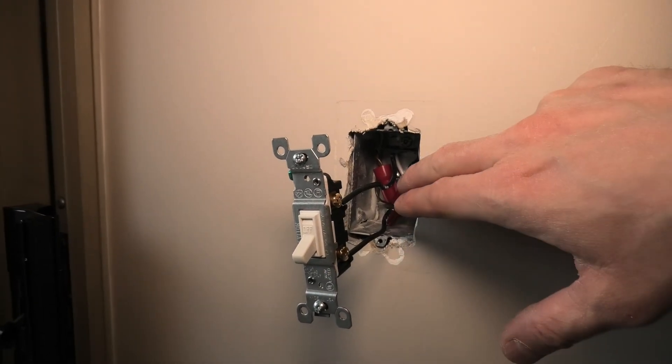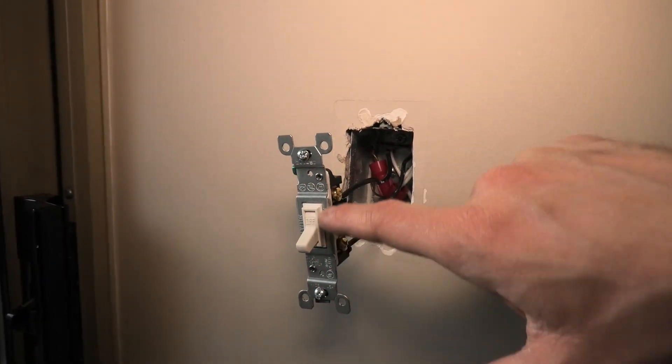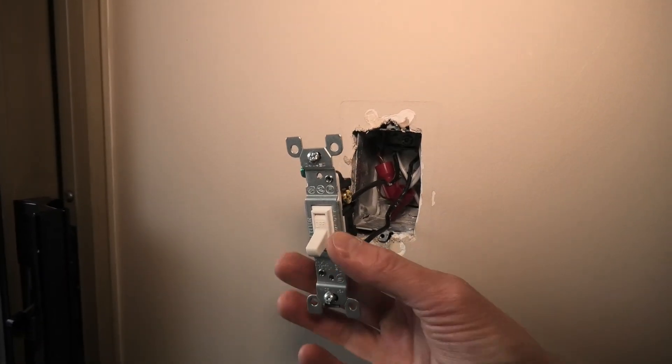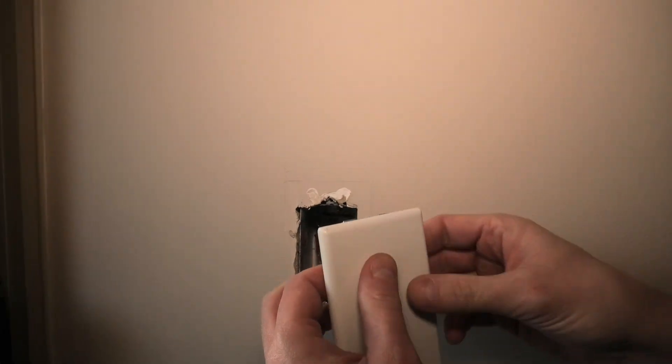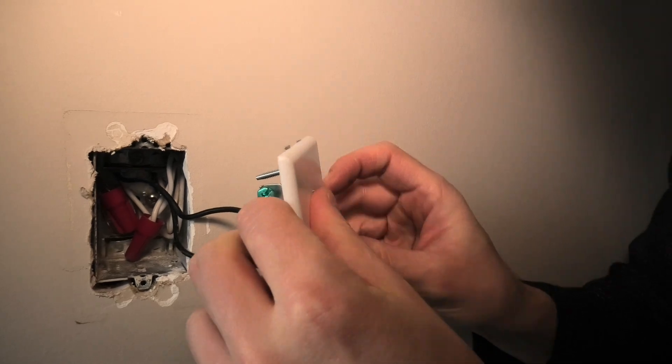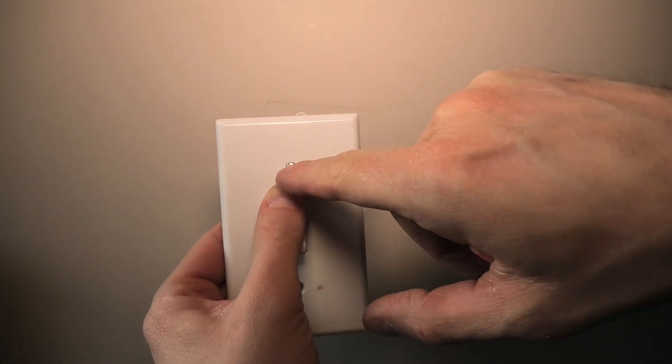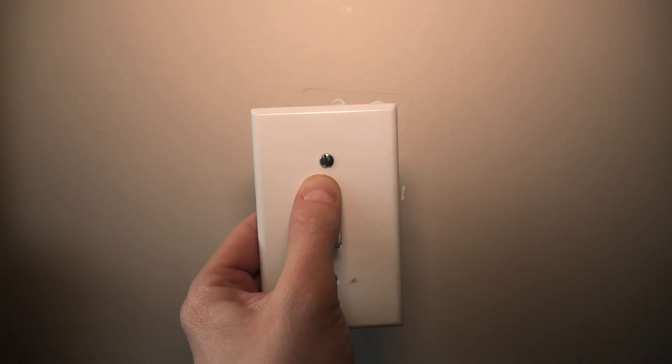And again, the box is not grounded and the switch is not grounded. In this case, this bracket would become energized. And besides that, once we have our plate installed, guess what would happen? This screw would be energized as well.